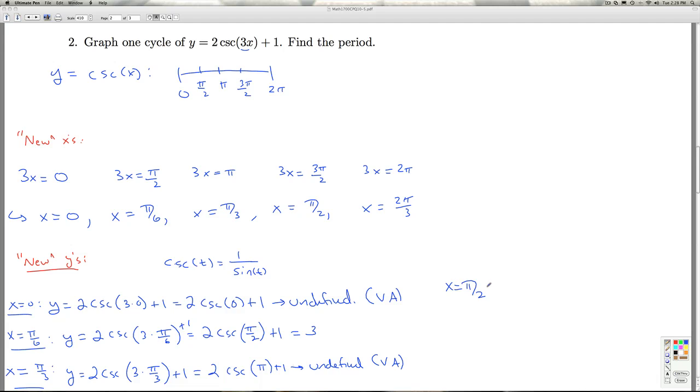For x = π/2, I get y = 2csc(3·π/2) + 1, which is 2csc(3π/2) + 1. The cosecant of 3π/2 is 1 over sine of 3π/2. Since sine of 3π/2 is -1, I get 2·(-1) + 1 = -1.